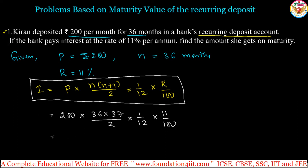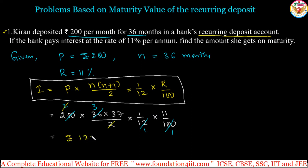Now only calculation is needed. We can cancel: 12 and 36 reduce — 36 divided by 12 gives 3. Then 100 and 200 cancel — 200 divided by 100 gives 2, and that 2 cancels with the denominator 2. Finally, no denominator remains. We multiply 3 × 11 × 37: 3 × 11 is 33, and 33 × 37 gives interest of rupees 1221.